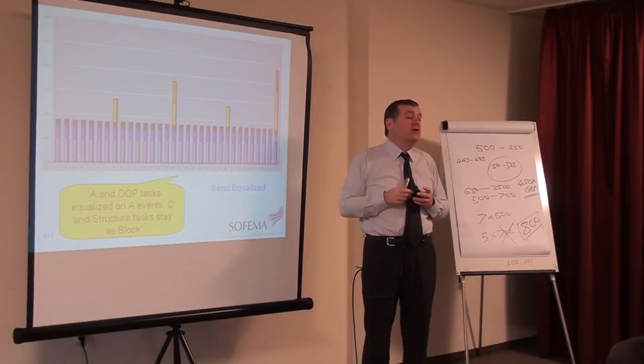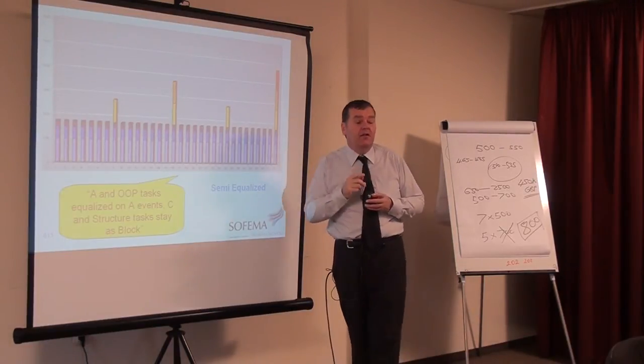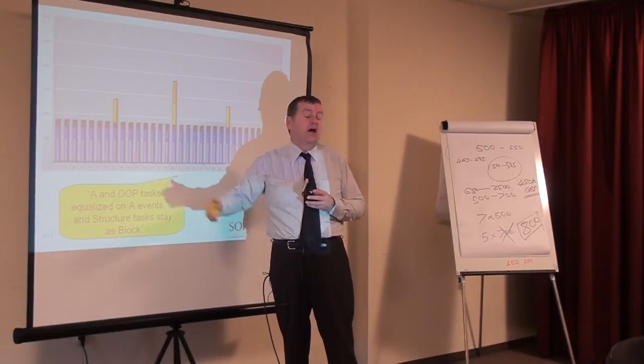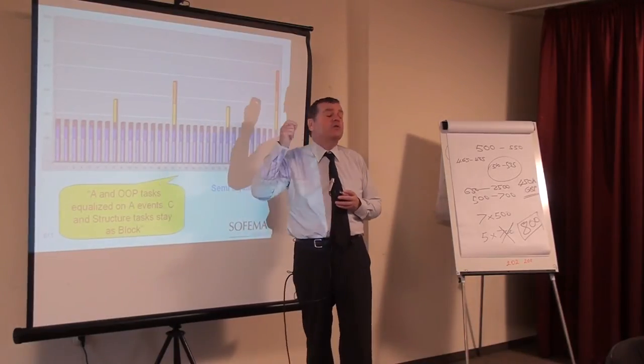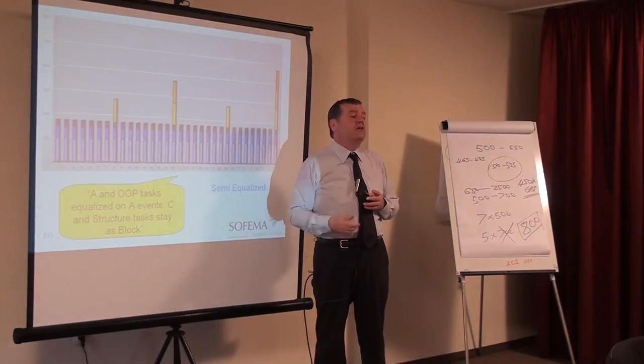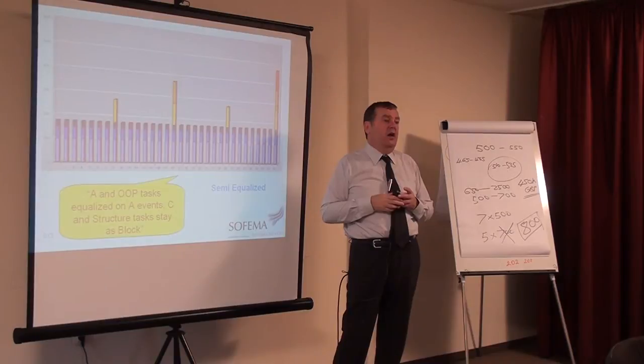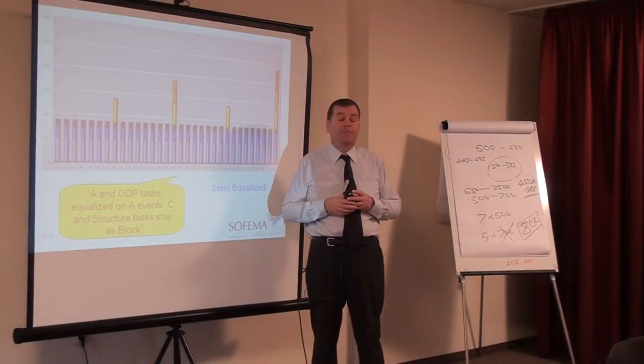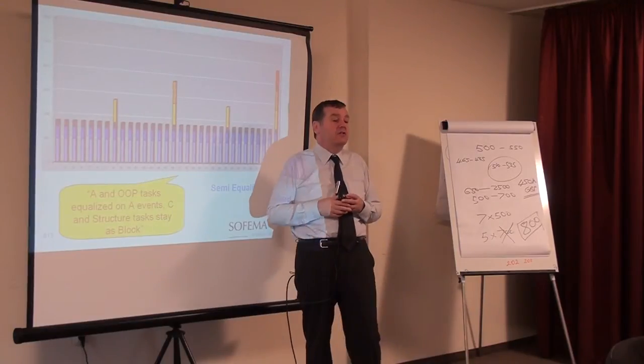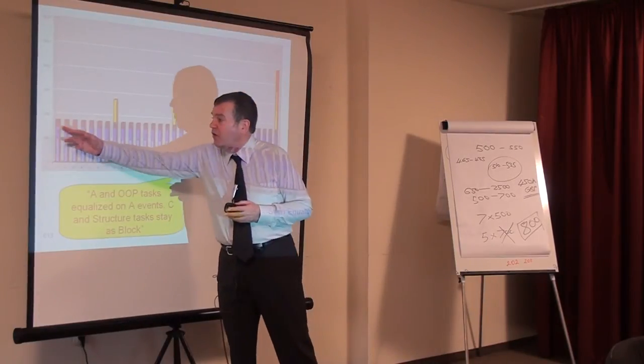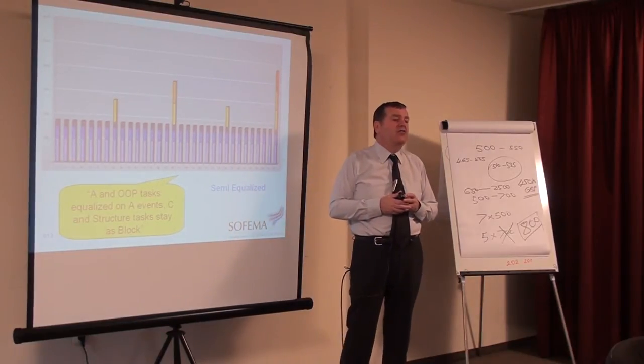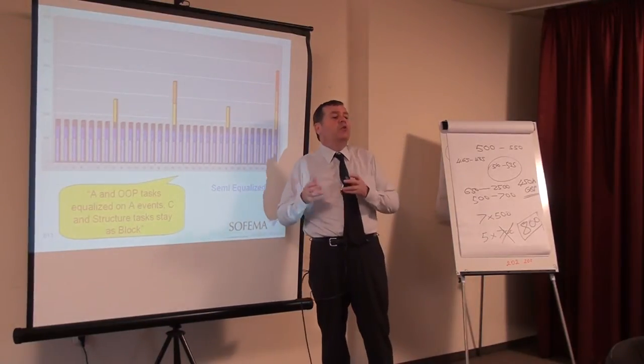Some companies decide that they will stay with the A check equalized and they will outsource the C checks. They will send the aircraft somewhere else for the C check. That would be a very effective way, for some companies, of managing the business. Because now we've got a consistent A check product and it's working okay.